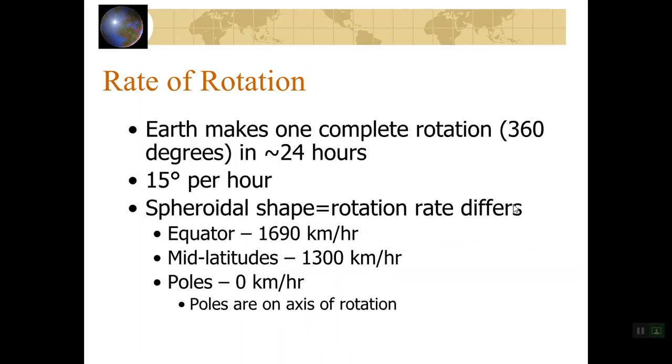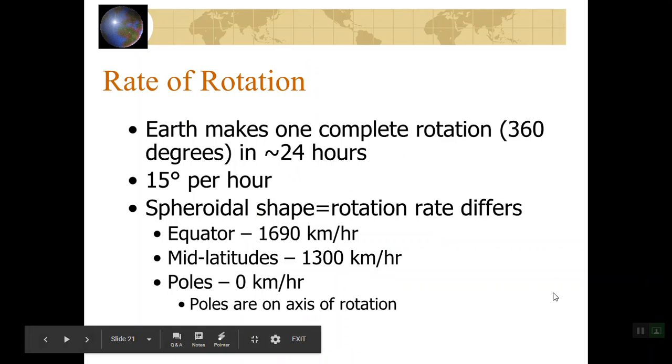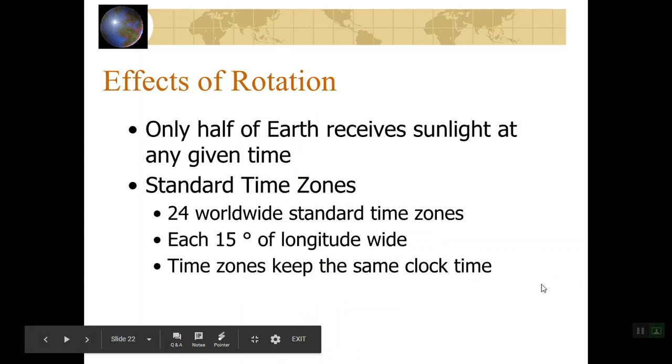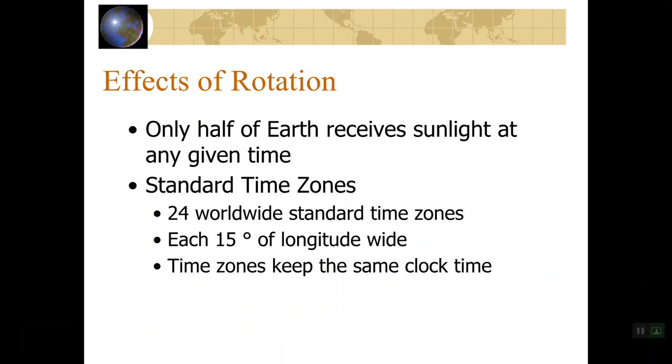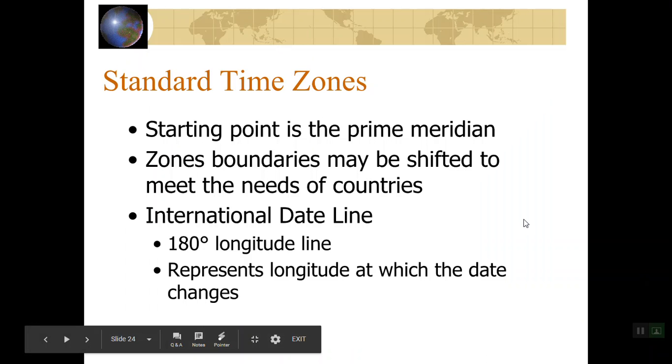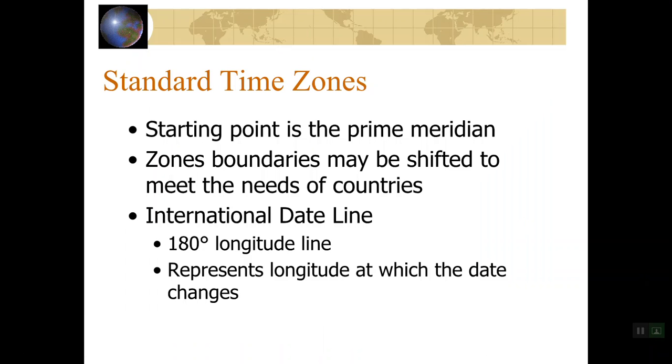Earth makes one complete rotation, 360 degrees, in 24 hours or one day. So that's 15 degrees per hour. Only 50% of Earth, or half of Earth, receives sunlight at any given time, but it's always that way. We do have different time zones because of our rotation, but that is not going to be on your test.